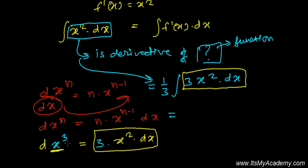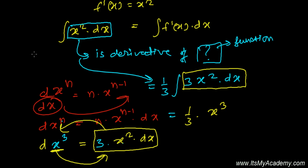Integration is just the reverse process of finding a derivative. Since x cubed has derivative 3x squared, the integration of 3x squared will be x cubed — opposite process. So we get one-third times x cubed. And since I was finding the integration of x squared, I must put the constant of integration at the end. Always put that constant after the completion of the whole process.